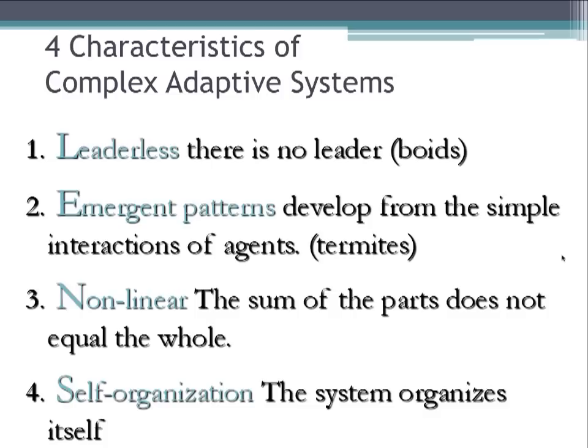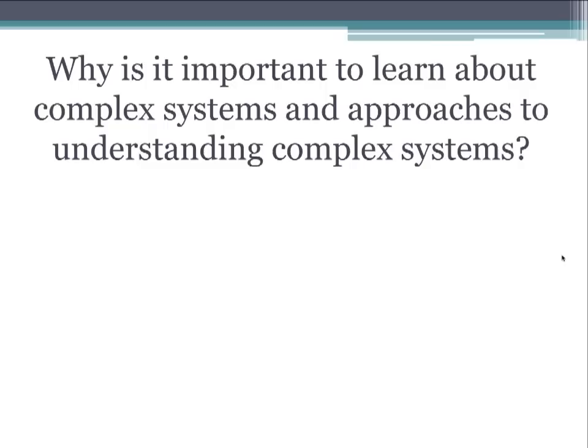To review, four characteristics of complex adaptive systems we've seen are: leaderlessness — there is no leader; emergent patterns — patterns that develop from the simple interactions of agents; non-linearity — the sum of the parts does not equal the whole; and self-organization — the system organizes itself.